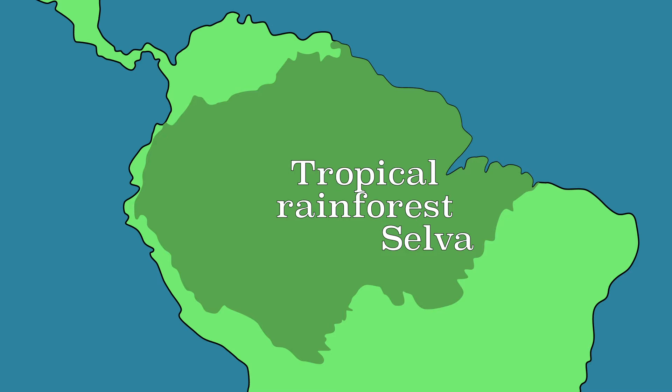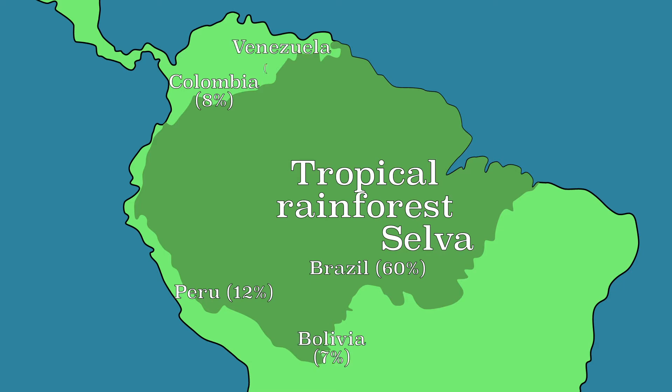60% of the Amazon is located in Brazil. The remaining parts are in Peru, Colombia, Bolivia, Venezuela and a few smaller countries.